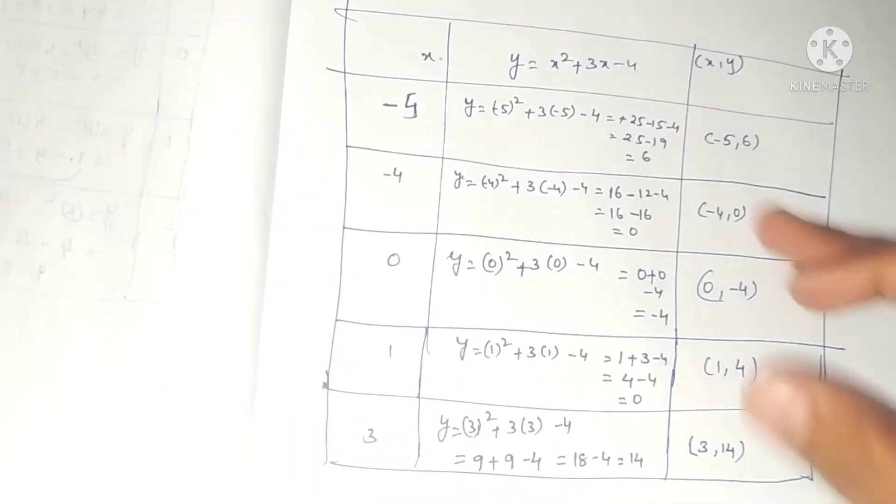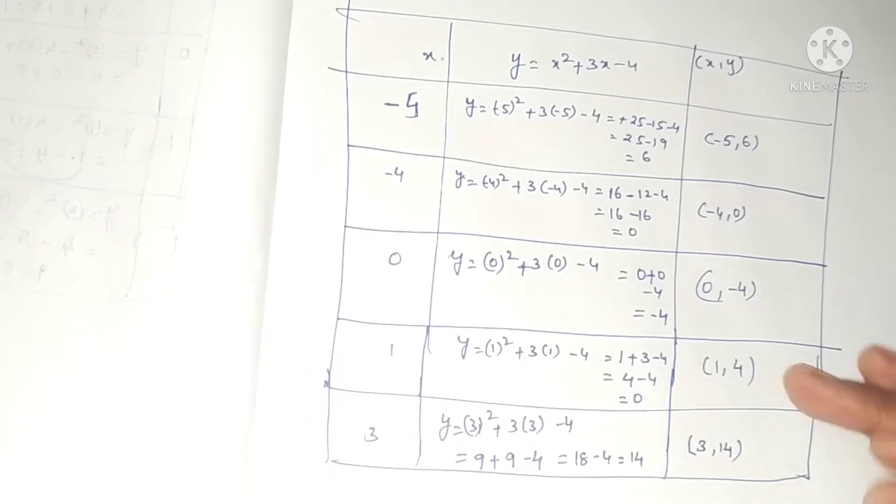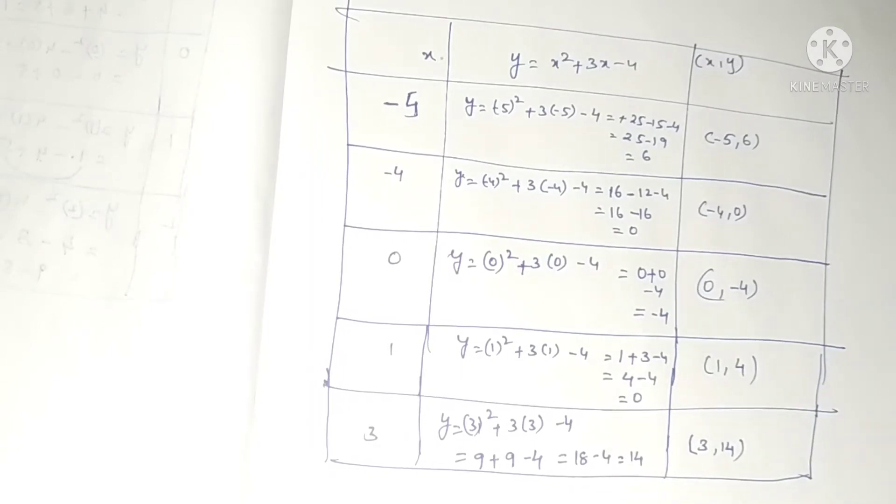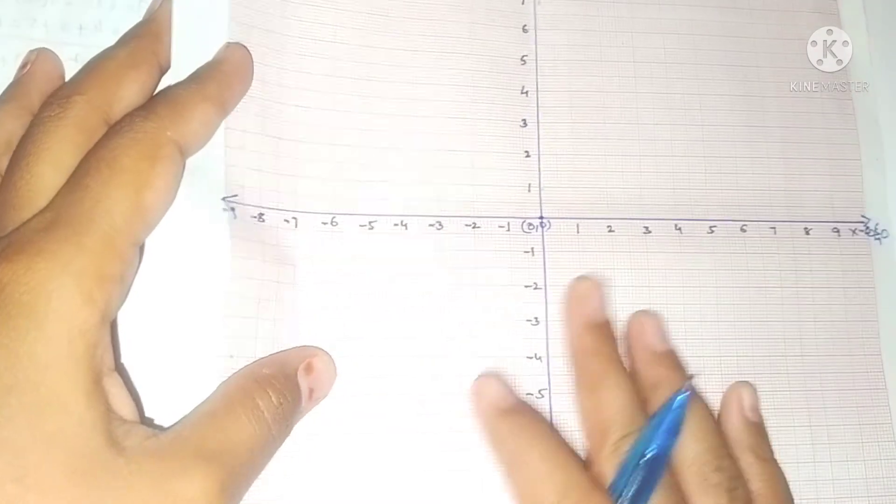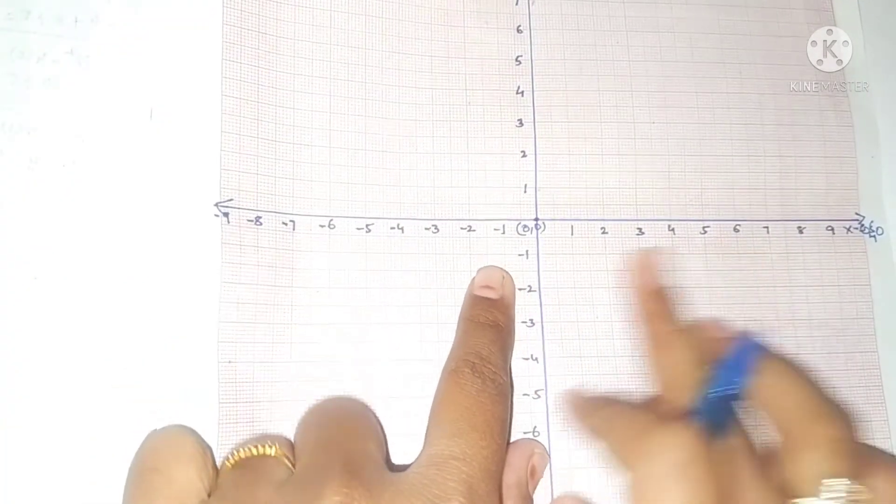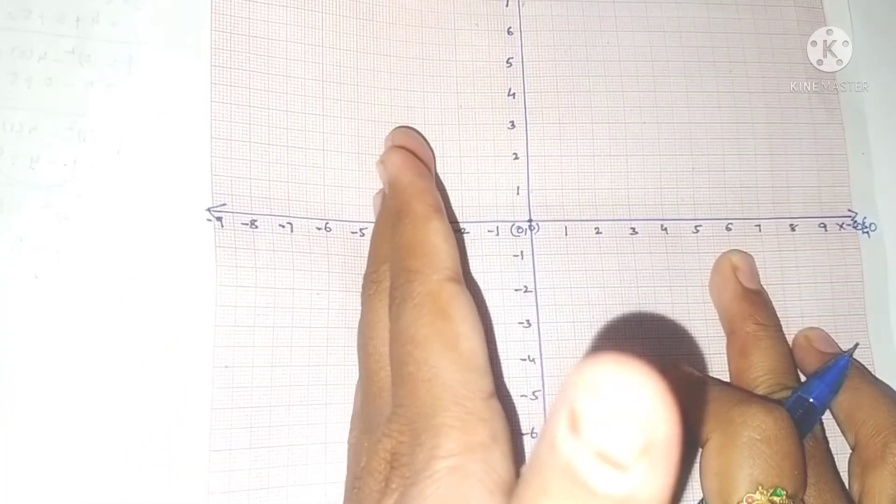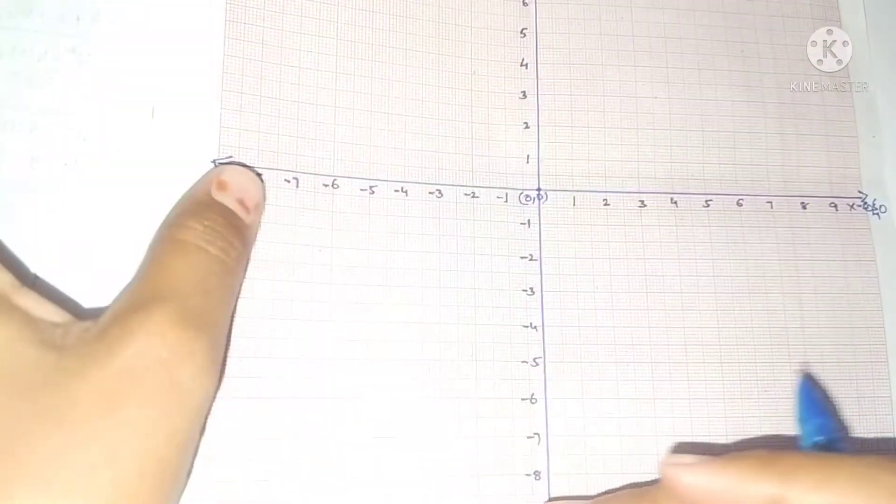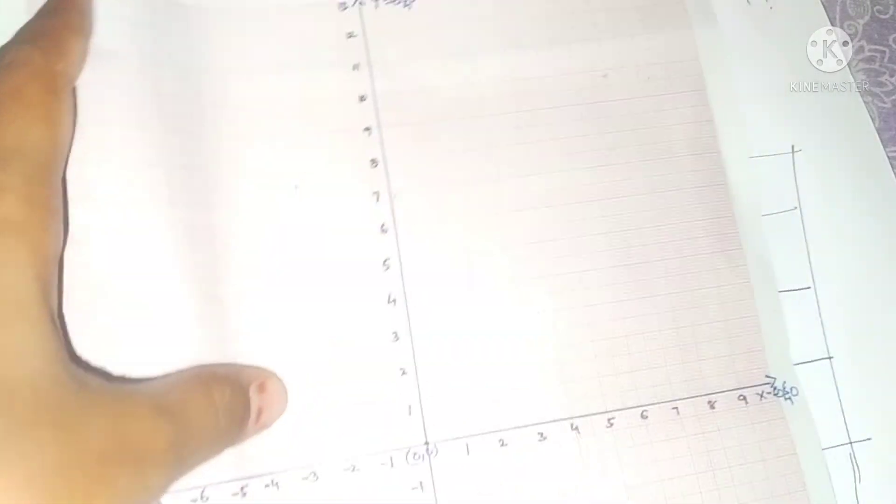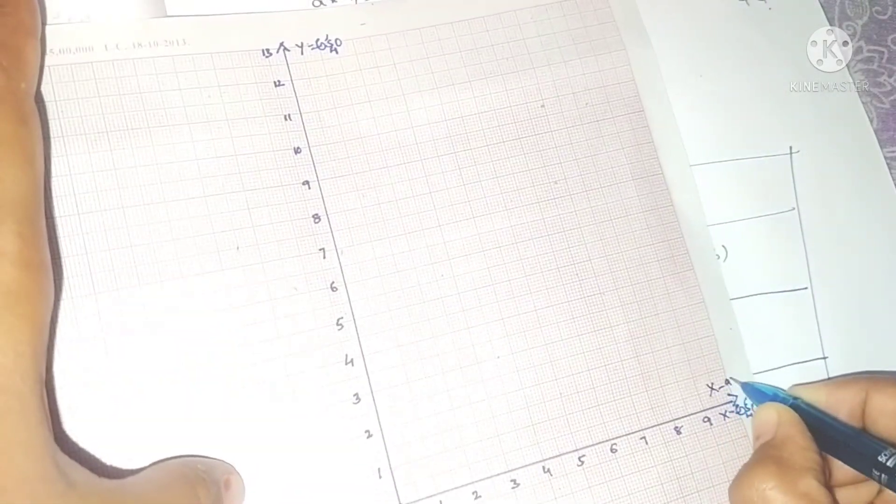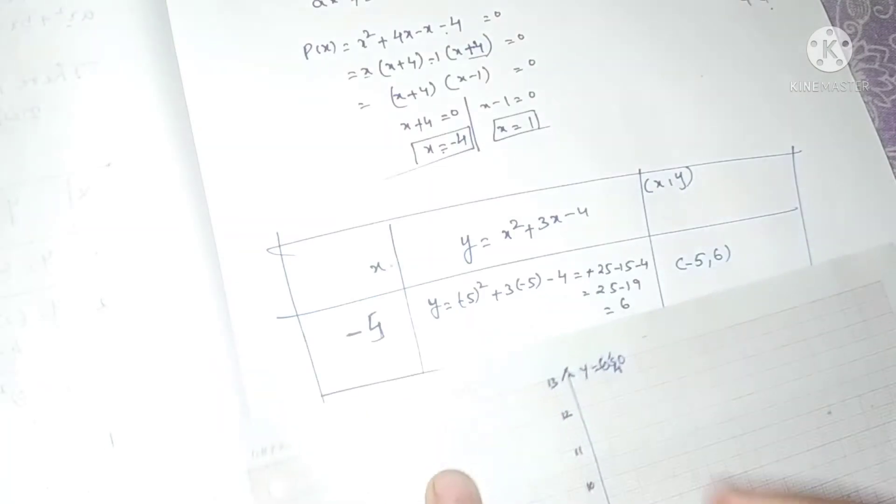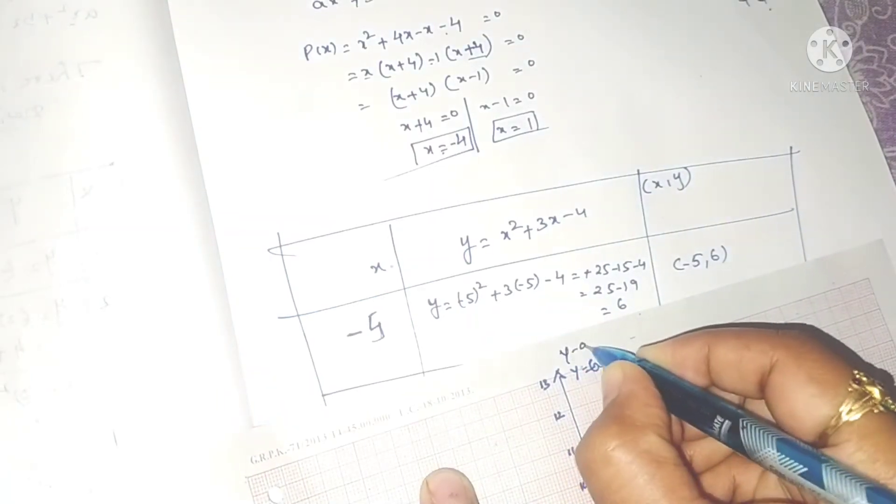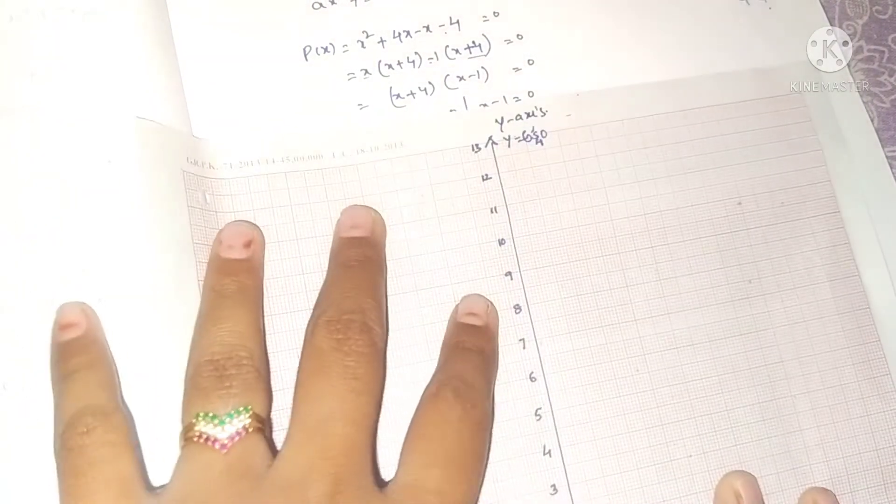Now we will draw these points in the graph. In the graph, 0 is the center, right side is positive numbers, left side is negative numbers. This is the x-axis, and this is the y-axis.